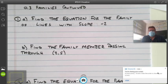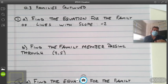All right, welcome back everybody. This second video is going to describe some goofy families, some problems you may never have seen before. The first one here says find the equation for the family of lines with slope negative two.